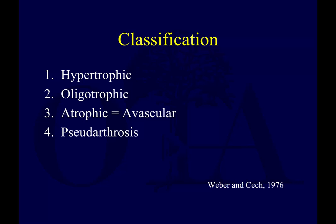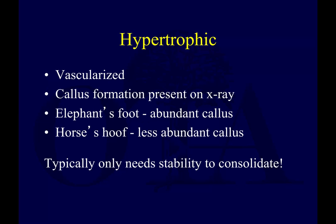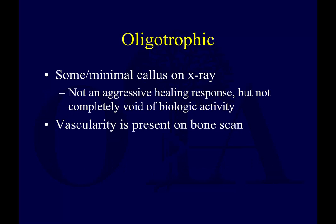There are additional classification terms you should be aware of. One is hypertrophic non-union. You can also have an oligotrophic non-union, an atrophic non-union, or a pseudarthrosis. Hypertrophic non-union is vascularized — callus is being made on X-ray. You may have this elephant's foot or horse's hoof type appearance with abundant callus, but it's just not stable enough. It needs stability; there's motion.